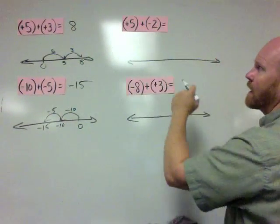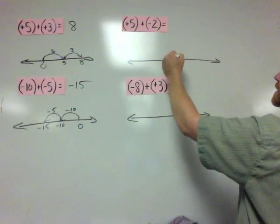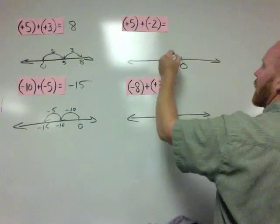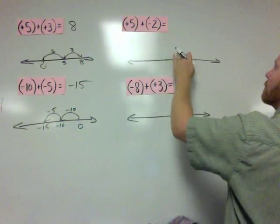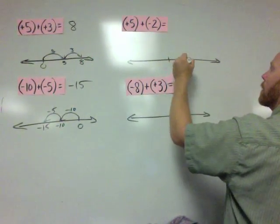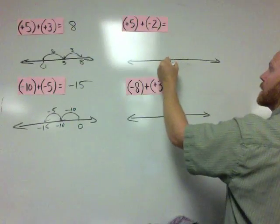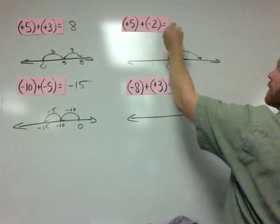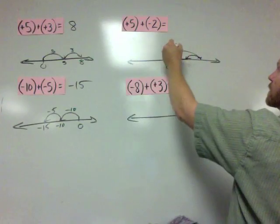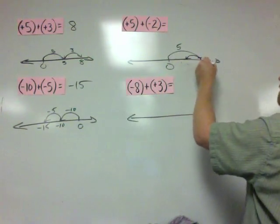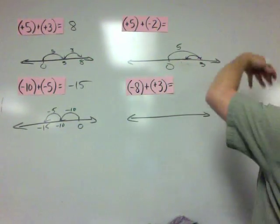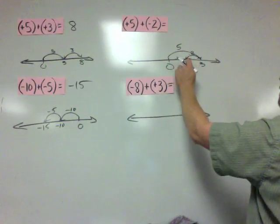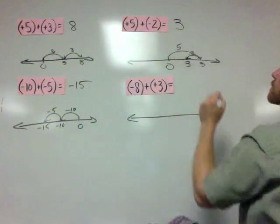Up here we've got positive 5 plus negative 2. The first hop is 5 to the right, and then negative 2 is 2 to the left. The first hop puts us at 5, the second hop of negative 2 puts us at 3. So that answer is 3.